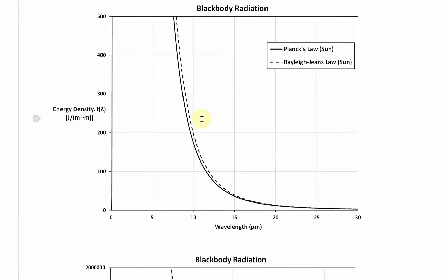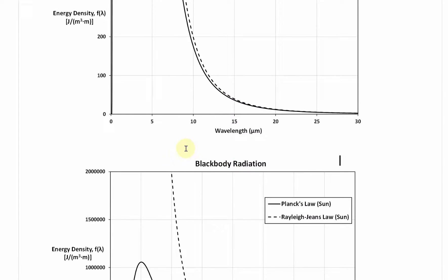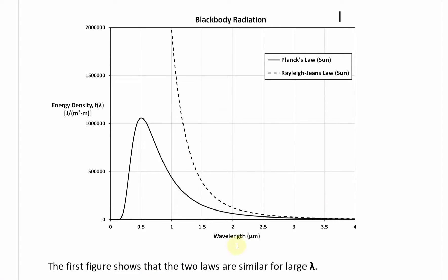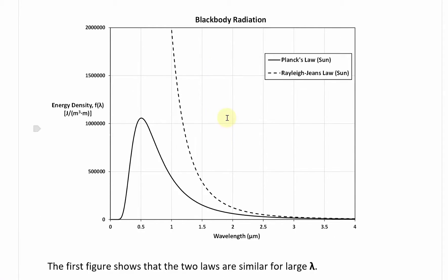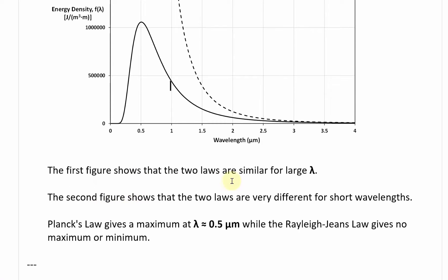You can see it matches up at higher wavelengths. This gets higher here and is pretty similar to it. But if you look at shorter wavelengths and change up the scale, you can see it better. Here's what happens at shorter wavelengths. Notice Planck's law goes like this and goes down.